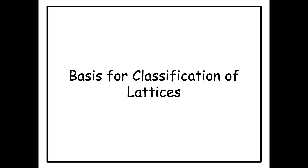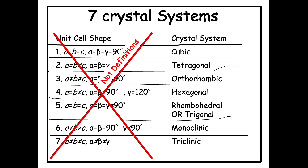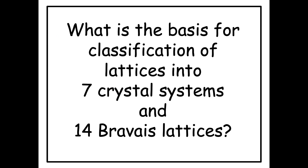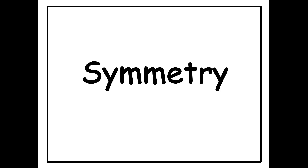Let us discuss the true basis for classification of lattices. In a previous video, we saw that although often lattices are defined in terms of the relation between lattice parameters like a equal b equal c and alpha equal beta equal gamma 90 degrees for a cubic system, these cannot really be taken as definitions. So what is the true basis for classification of lattices into these seven crystal systems and subsequently into 14 Bravais lattices? This basis is symmetry. So in this video, we will give you a brief introduction of this concept of symmetry.